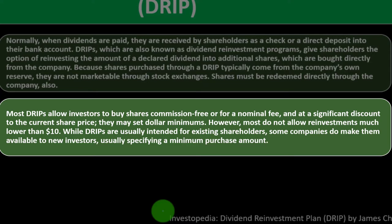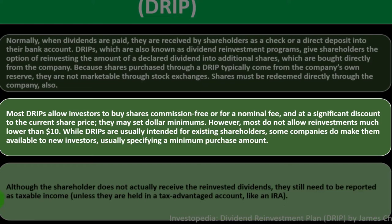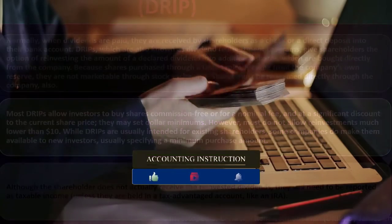Most DRIPs allow investors to buy shares commission-free or for a nominal fee, and at a significant discount to the current share price. They may set dollar minimums, however, and most do not allow reinvestments much lower than ten dollars. While DRIPs are usually intended for existing shareholders, some companies do make them available to new investors, usually specifying a minimum purchase amount.